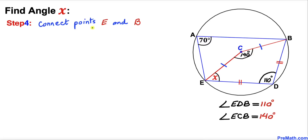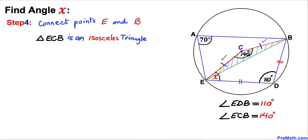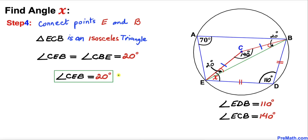Next, we connect points E and B and focus on the shaded triangle ECB. This is an isosceles triangle since EC equals CB. Therefore the two base angles are equal. Since the angles in any triangle sum to 180 degrees and angle ECB is 140 degrees, both base angles are 20 degrees each. So angle CEB is 20 degrees.